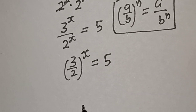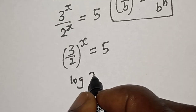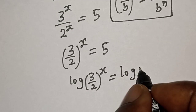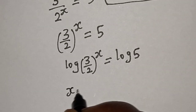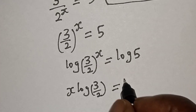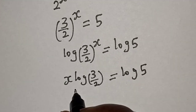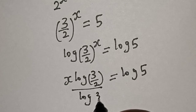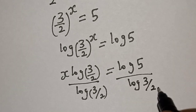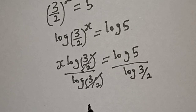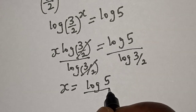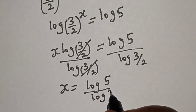Now let's take the log of both sides. Log of 3 over 2 raised to power x is equal to log 5. And x times log of 3 over 2 is equal to log 5. Let's divide both sides by log 3 over 2, so this will cancel. x is equal to log 5 over log of 3 over 2.